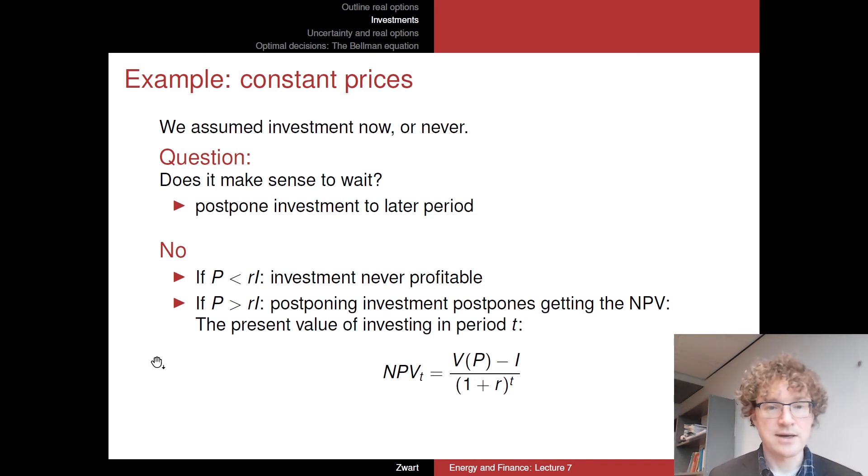On the other hand, if today this price is higher than this threshold, level R times I, then you can make this investment today. You can also wait a year and make the investment next year. But what does that gain you? What does that give you? Well, you get the NPV, but you get the NPV, V minus I, you get that year later. So there's basically a loss in the sense of the present value of this NPV, which means discounting by this 1 plus R to the power of the number of years that you wait, that drives down basically this whole expression over here, as long as interest rates are positive.